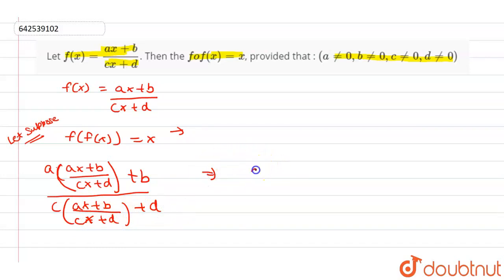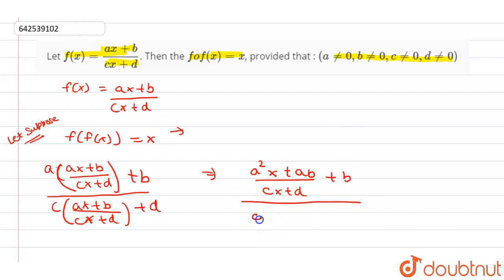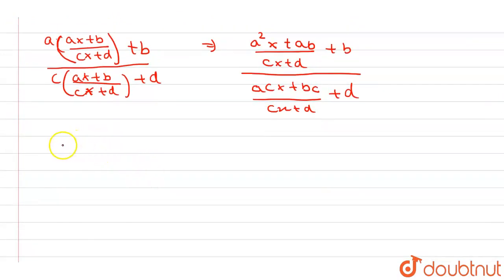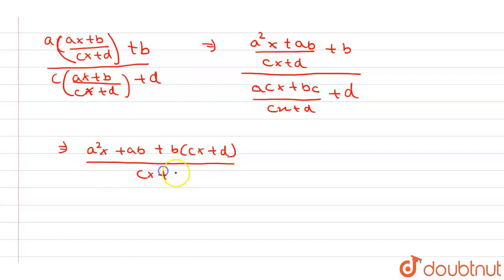On solving, taking LCM, the numerator becomes a(ax + b) + b(cx + d), which expands to a²x + ab + bcx + bd, and the denominator is c(ax + b) + d(cx + d).